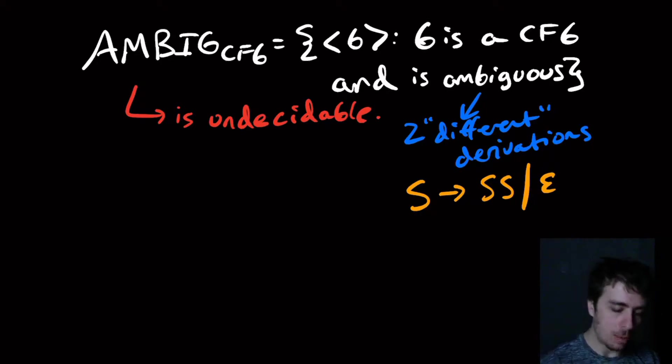We may want to know whether the grammar is ambiguous because there are certain algorithms that run faster on unambiguous grammars. Also, if it is ambiguous, then a parser for it may have many different choices it has to make. But if it's unambiguous, it's a lot easier.